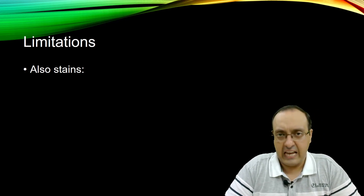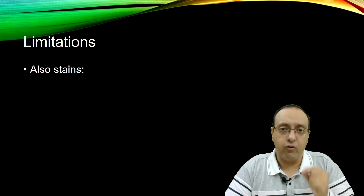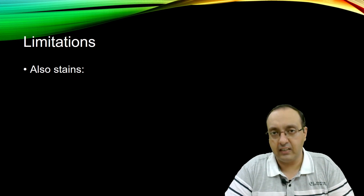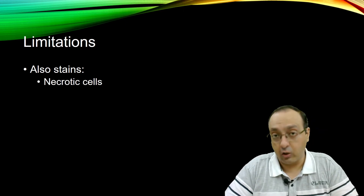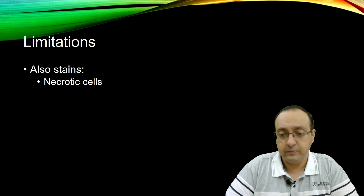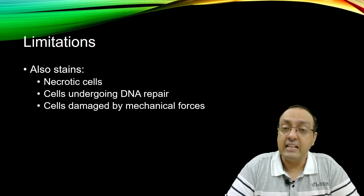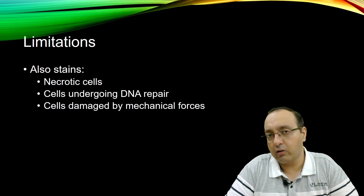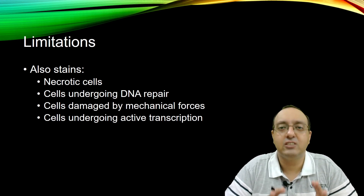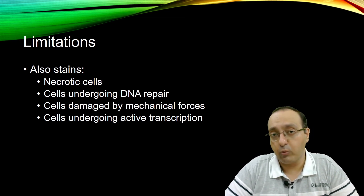There are also limitations to this assay. The TUNEL assay is not specific for apoptotic cells — it was later realized that it also stains many other types of cellular activity. For example, it also stains necrotic cells undergoing necrosis, which is another type of cell death unrelated to apoptosis. It also stains cells undergoing DNA repair, cells damaged by mechanical forces such as shearing or shedding of DNA, and cells undergoing active transcription. So TUNEL assay is not very specific, and we have to keep these things in mind, but it is still a very good hallmark assay for detecting apoptotic cells.